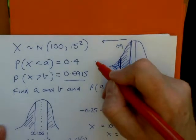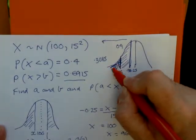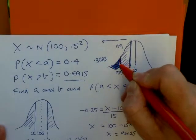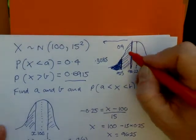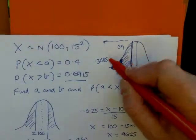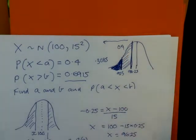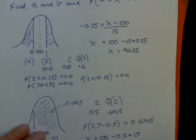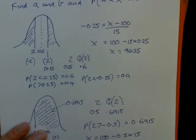So the bit below it would be 0.3085. So the bit that I'm shading now is 0.3085. So the bit we want is 0.4 subtract 0.3085. I'll just write that down the bottom. So it equals 0.4 minus 0.3085.